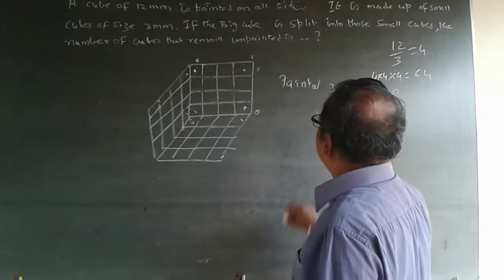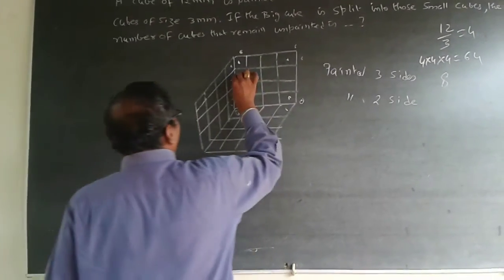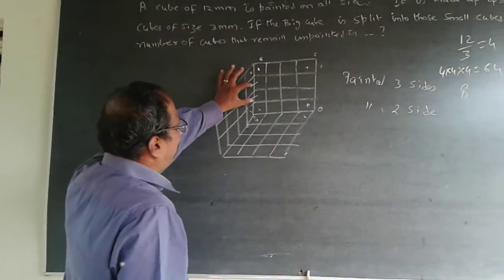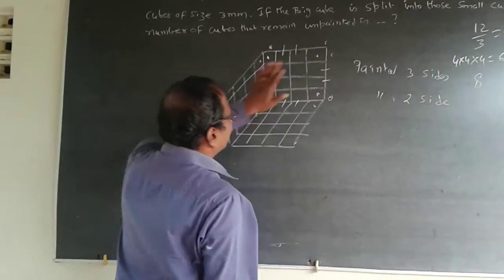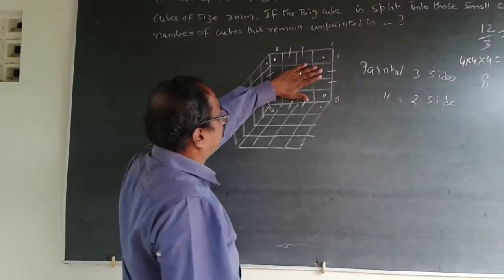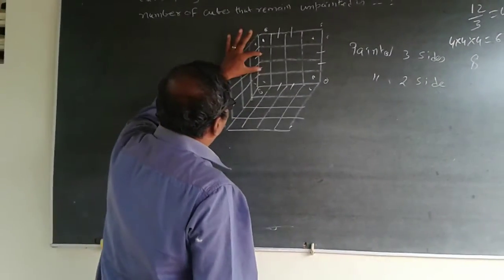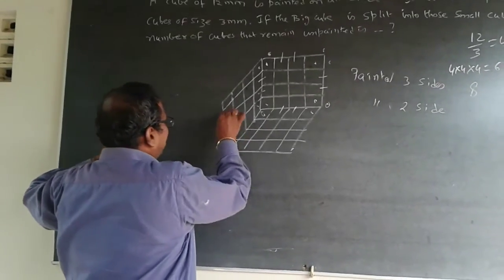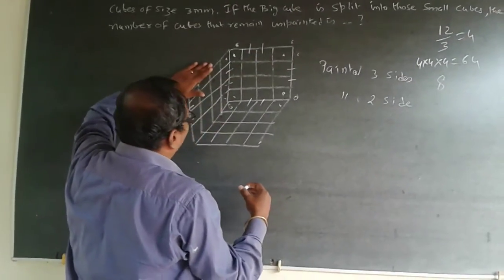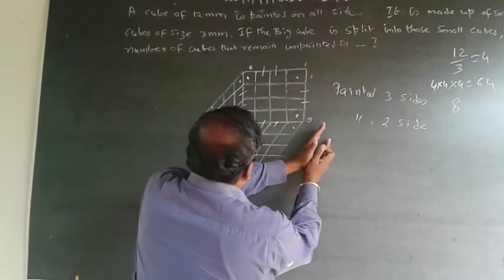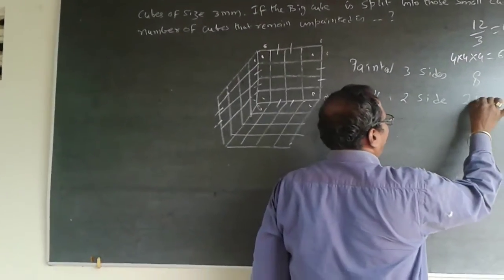Painted three sides will be eight. Coming to painted two sides: this cube will be painted on this side and this side — painted two sides. Eight at the top will be painted two sides; similarly, eight at the bottom will be painted two sides. The remaining edge cubes — two plus two on opposite sides gives four more, and four on the other two sides — so top 8, bottom 8, plus 8 more gives 24 painted two sides.